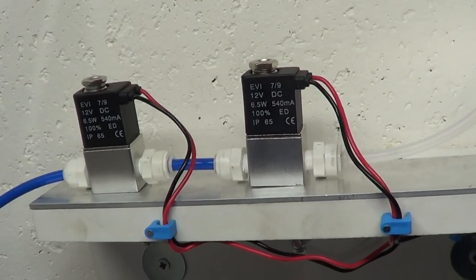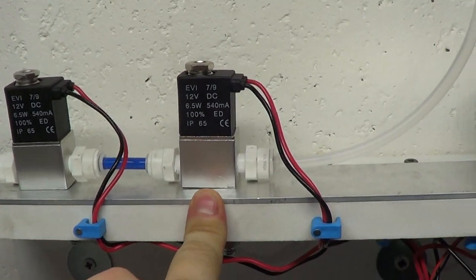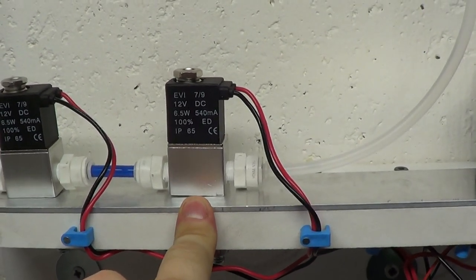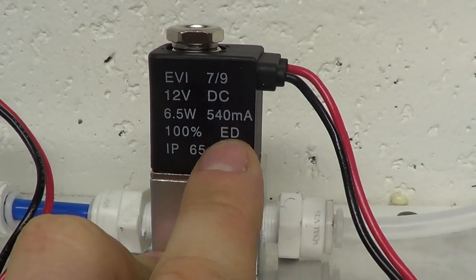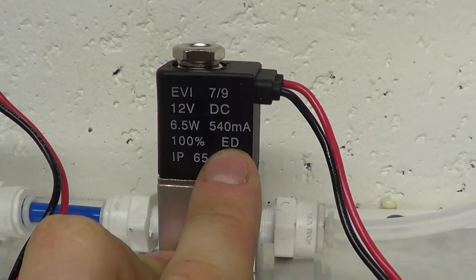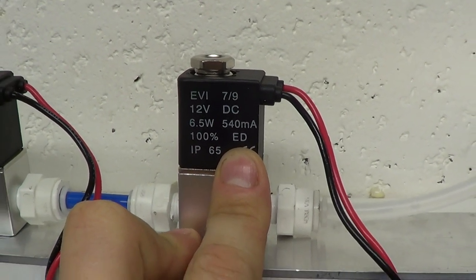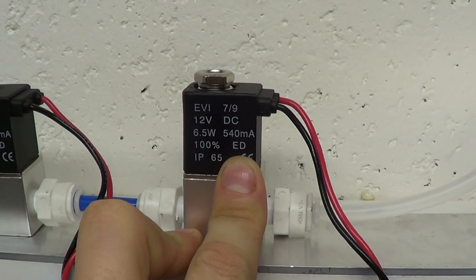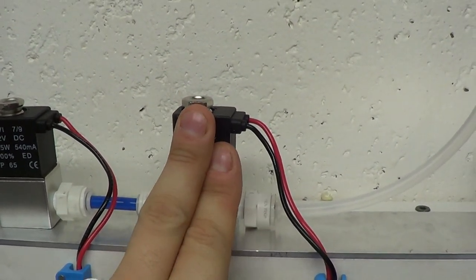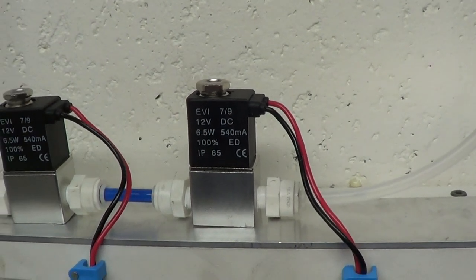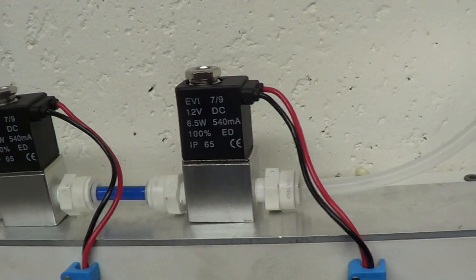Now, the most important thing when picking a solenoid valve, as I learned, is to find one that says 100% ED. And basically what that means is it's rated for continuous use. A lot of solenoid valves out there are not rated for continuous use, and what that means is this electromagnet will heat up to a very high temperature, actually to the point where your components could fail.